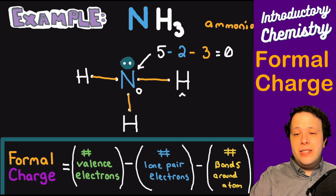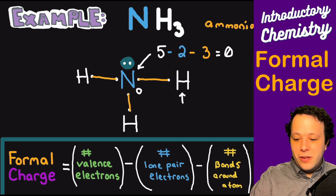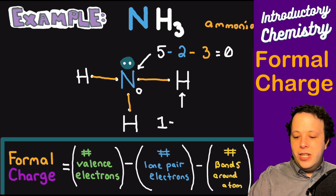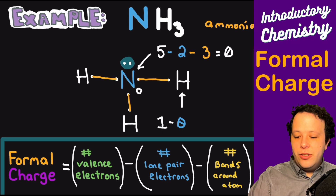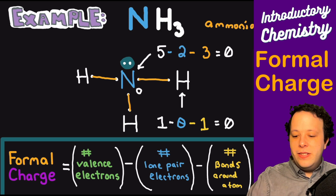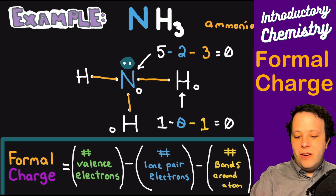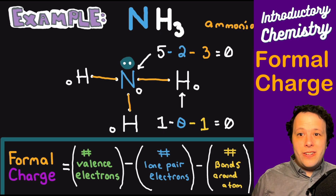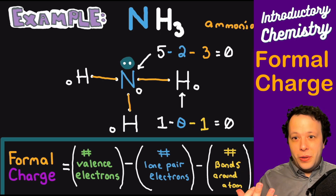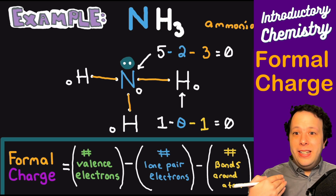That doesn't always mean you have the final structure — you have to check everything — but the goal is to have as low numbers as possible, ideally zeros. Now for hydrogen, we do the same thing: one valence electron, zero lone pairs on hydrogen, and one bond being formed. One minus zero minus one equals zero. So all of the hydrogens have a zero formal charge. This is your correct Lewis structure — it's a way to check your work.